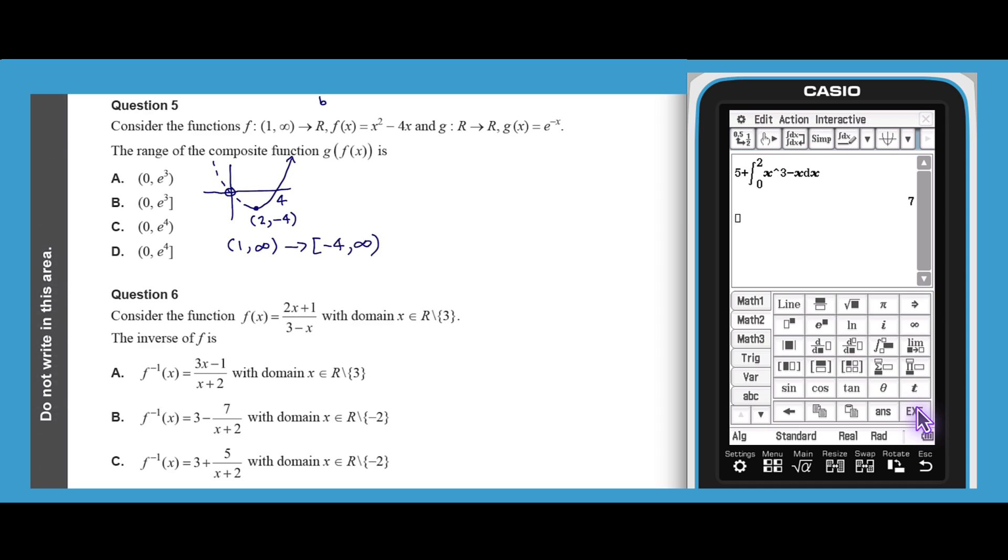The exponential decay function g looks like this, and so g of f of x has an endpoint at g of negative 4, which is e to the 4. So the range of g of f of x is the y values between this endpoint of e to the 4 and 0. As such, the answer is D.